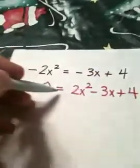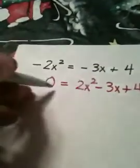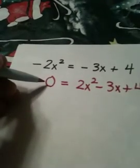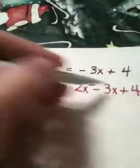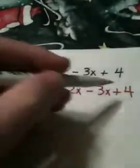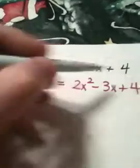Please remember in standard form it doesn't matter what side of the equation says 0. What matters is that your equation is in standard form, meaning we have descending power order and the leading coefficient is positive.